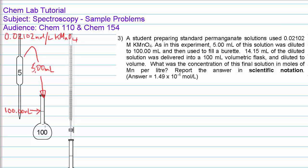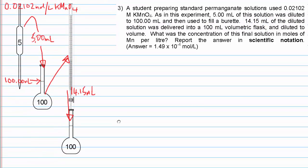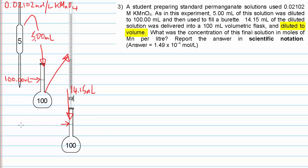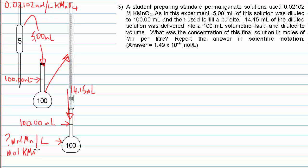Then that solution is added to a burette, and from the burette we deliver 14.15 millilitres of this solution into a second 100 millilitre volumetric flask, which is again diluted to the mark with water so that the total volume is precisely 100.00 millilitres. The problem asks for the concentration of this final solution in units of moles of manganese per litre. We'll first calculate it in moles of potassium permanganate per litre, then convert to moles of manganese per litre.